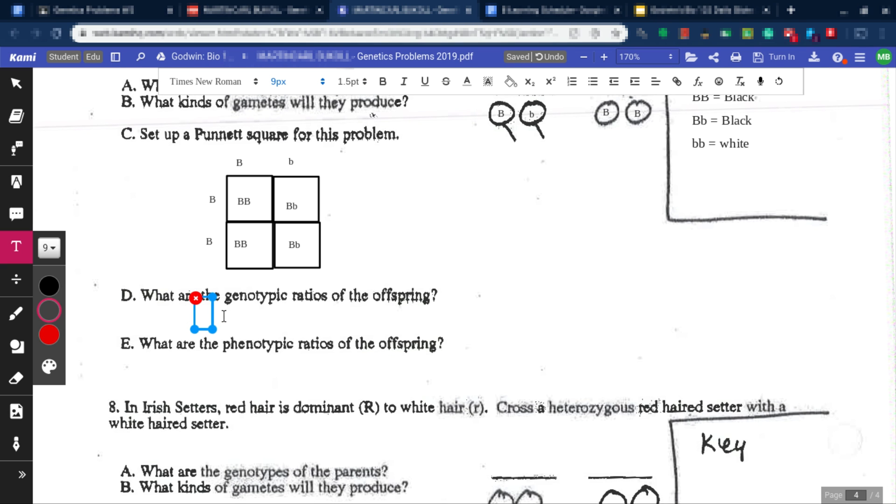So genotype ratios. So that would be, I believe, pretty sure we have to say two fourths. Maybe we could reduce it, I'm not sure. In my teacher's example she put two fourths for this one. So that would be BB and then two fourths BB. Alright, perfect.